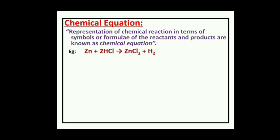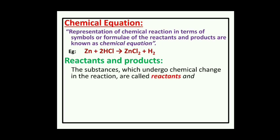In a chemical equation, we represent the formulae of reactants and the formulae of products. From this, we get two new terms: reactants and products. Let us see what reactants and products are. Reactants are the substances which undergo chemical change in the reaction.